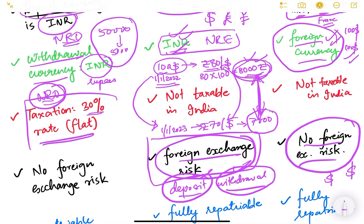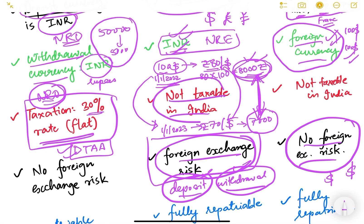For NRO account deposits, there is a 30 percent flat tax charged by the Government of India, since it is income earned in India. An exception applies if the person resides in a country where India has signed a Double Taxation Avoidance Agreement (DTAA) — in that case they are not taxed in India as well. For NRE and FCNR accounts, there is no tax because that income is not earned in India.